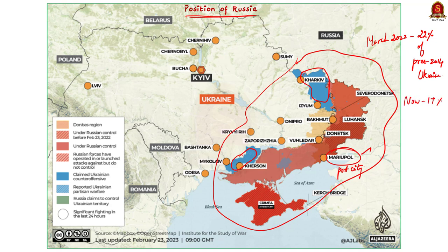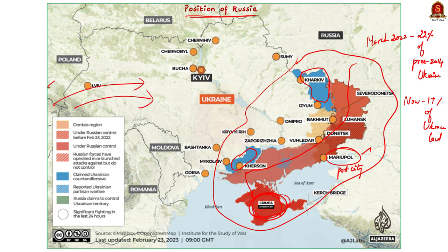Putin also managed to secure a land bridge between mainland Russia and Crimea. With a new offensive, Russia plans to mount more pressure on Ukrainian troops, and this is exactly why the West is also rushing more weapons to the battlefield.